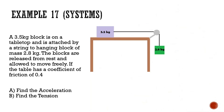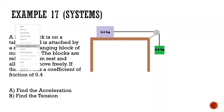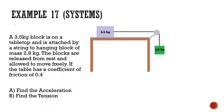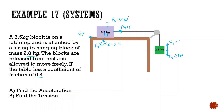A 3.5 kg block is on a tabletop connected to a hanging block of mass 2.8 kg. The blocks are released from rest and allowed to move freely. If the table has a coefficient of friction of 0.4, find acceleration and force of tension. So we know mu-k equals 0.4. First, I draw the free-body diagram. We have force of gravity 28 newtons and force of tension unknown for the hanging block. For the block on the table: normal force 35 newtons, force of gravity 35 newtons, force of tension unknown, and force of friction. We can figure out friction: 35 times 0.4 equals 14 newtons.